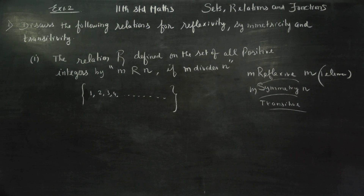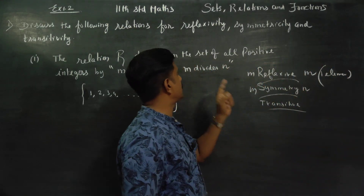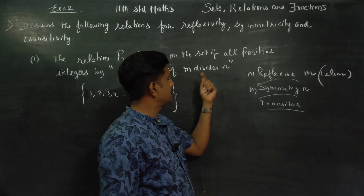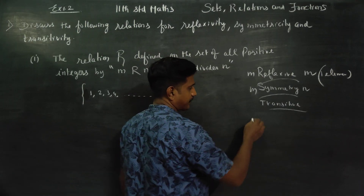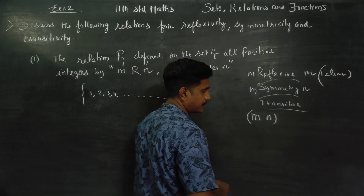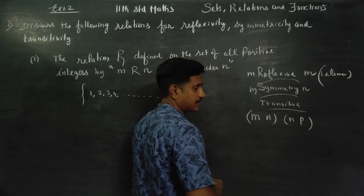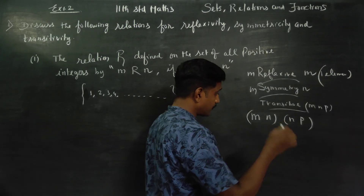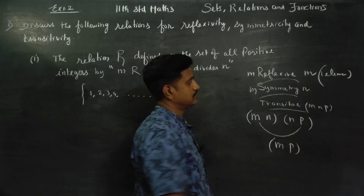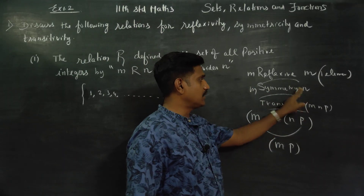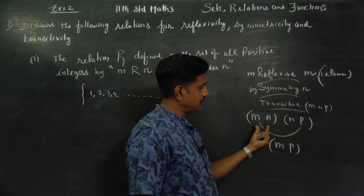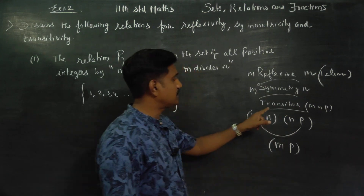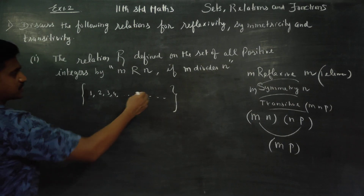The last one we have to check is transitive. For reflexive, we check with the same letter. For symmetry, we check direct and reverse order. For transitive, we use three letters: M, N, and P. We check M–N, then N–P, and finally M–P. R is transitive for positive integers.